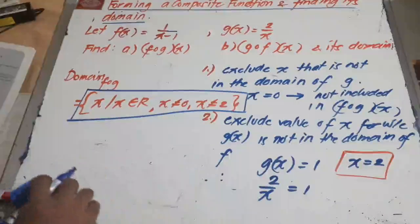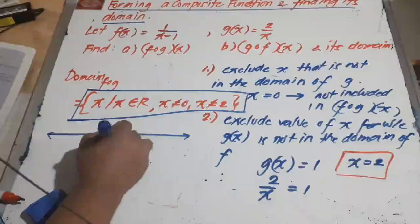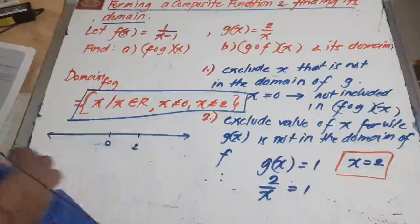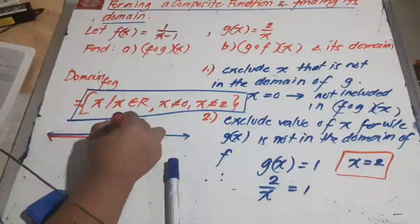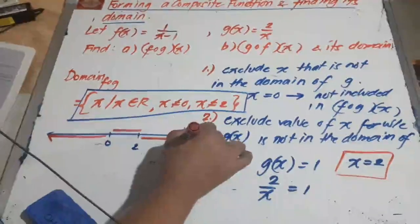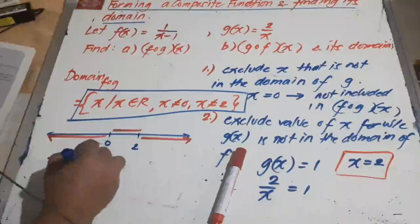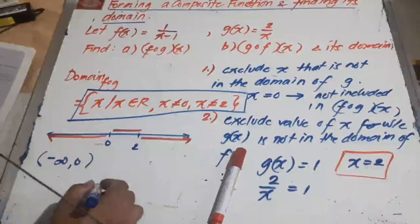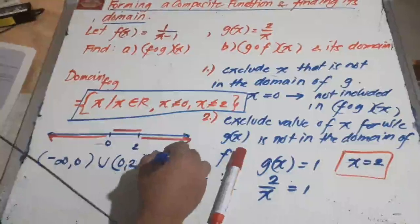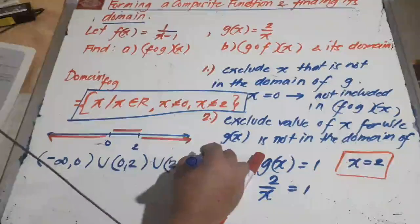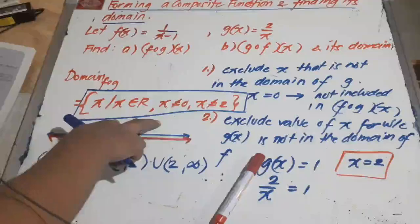In interval notation, since 0 and 2 are not allowed, we have three regions. The domain of f circle g is the union of: negative infinity to 0, open; then 0 to 2, open on both ends; then 2 to positive infinity, open. So the domain in interval notation is negative infinity to 0, union 0 to 2, union 2 to positive infinity. This is the equivalent interval notation of the domain of the composite function.